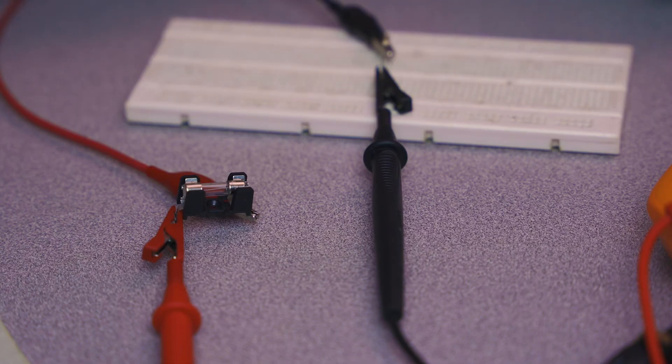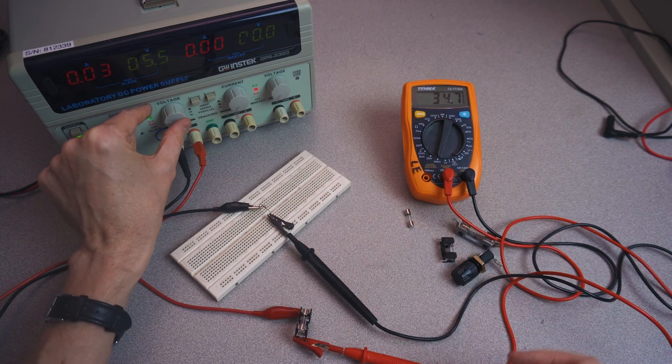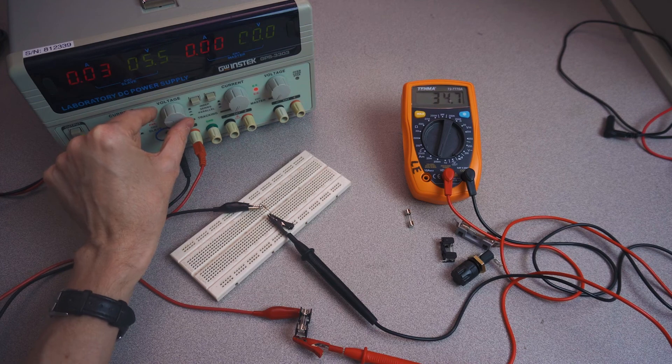Let's again do the same thing with this slow blow fuse that I did with the fast-acting fuse. I'm going to quickly turn the voltage up such that the current becomes something like 80 milliamps, and then we'll see how long it takes this slow blow fuse to blow out.